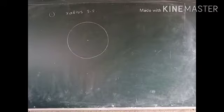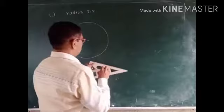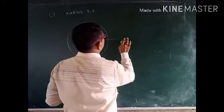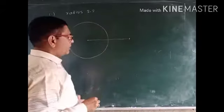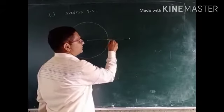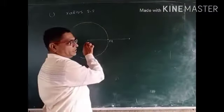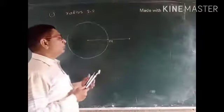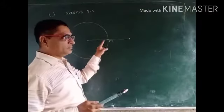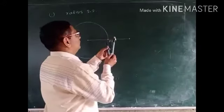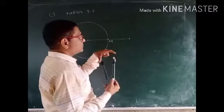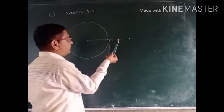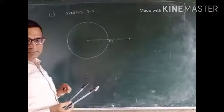Now we have to take point M on the circle. First I will draw a line passing through the center and intersecting the circle. Here is that line, and here is my point M. Now see the procedure: to draw a tangent at point M, take any distance between the two tips of the compass.